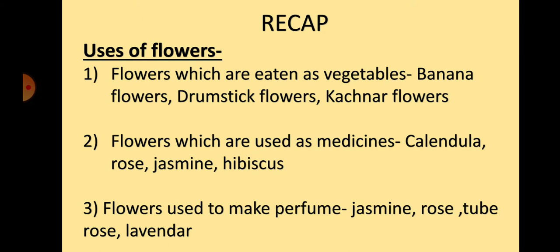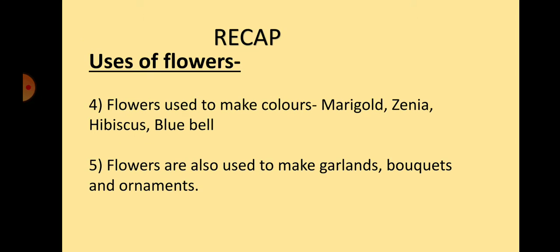So children, today you have learnt about some uses of flowers. Flowers eaten as vegetables are banana flowers, drumstick flowers, and kachnar flowers. Flowers used as medicines are calendula, rose, jasmine, and hibiscus. Flowers used to make perfume are jasmine, rose, tuberose, lavender, etc. Flowers used to make colors are marigold, genia, hibiscus, bluebill, etc. Flowers are also used to make garlands, bouquets, and ornaments.